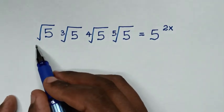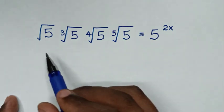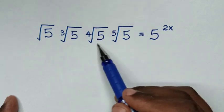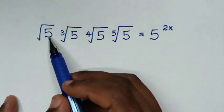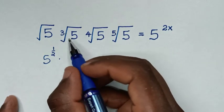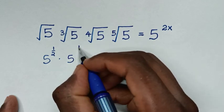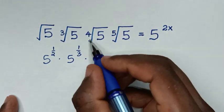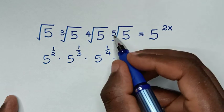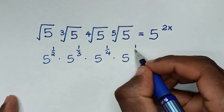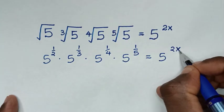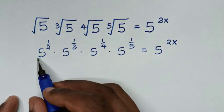To find the value of x from this equation, in the first step, on the left side we have roots, so we'll convert these roots into exponents. Square root of 5 is the same as 5 to the power of 1/2, times third root of 5 which is 5 to the power of 1/3, times fourth root of 5 which is 5 to the power of 1/4, times fifth root of 5 which is 5 to the power of 1/5, is equal to 5 to the power of 2x.